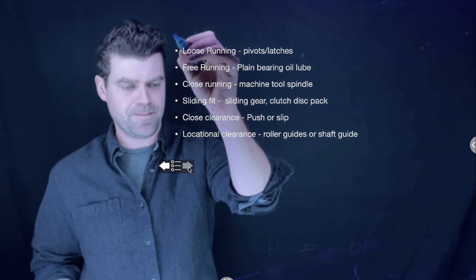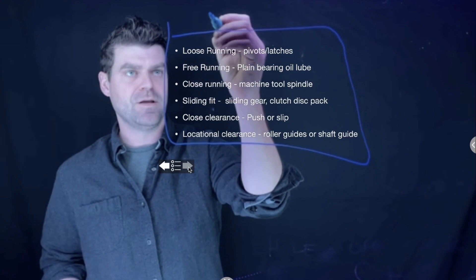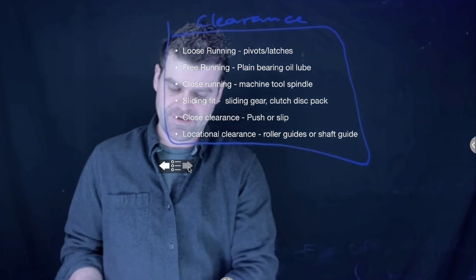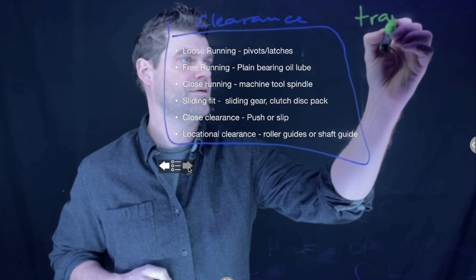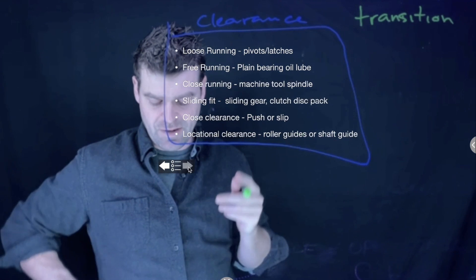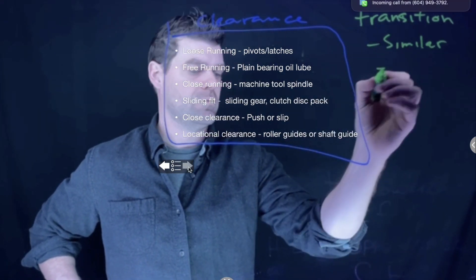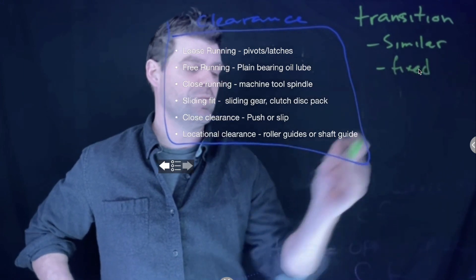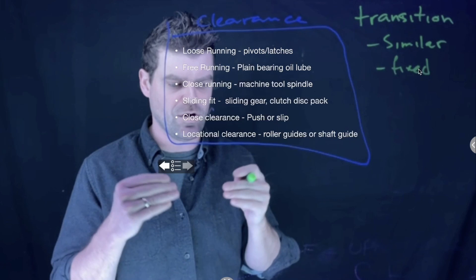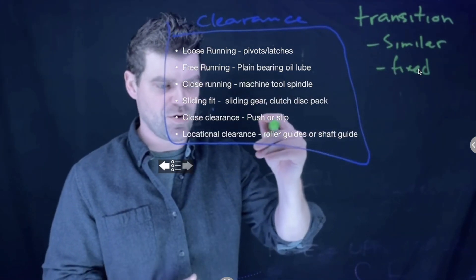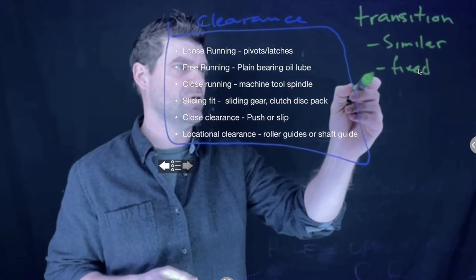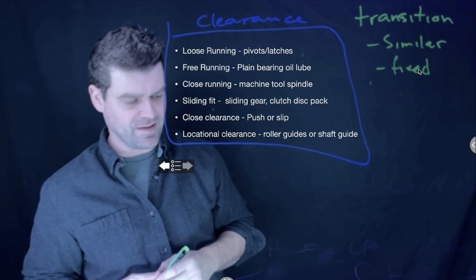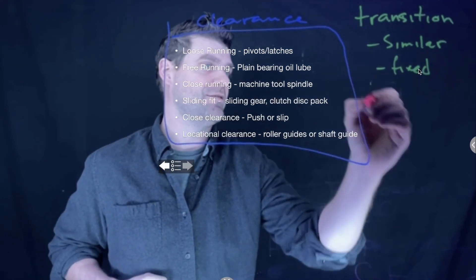Transition fits can be broken down into two types: similar and fixed. Similar means it's slightly looser — a finer fit that may go either way. Fixed is more precisely size for size, with tighter tolerancing. On the bar charts, the two squares representing similar and fixed would be very close to each other but with fixed having a finer tolerance.